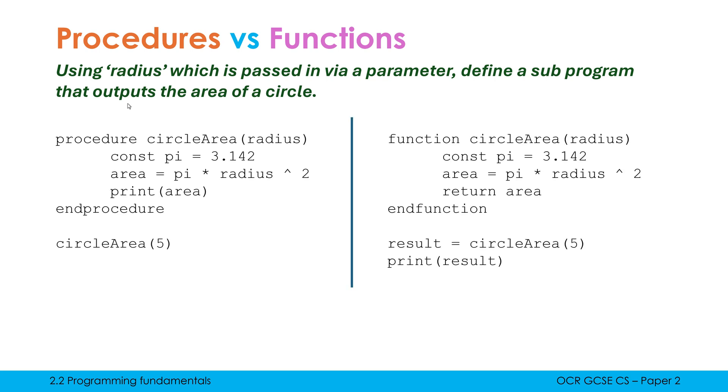So on the left we have a procedure in OCR exam reference language, and we have a function in OCR exam reference language. In Python, we use def for both definitions, so there is no easy way to see the difference apart from presence or not of the word return. If you compare them side by side, you can't see too many differences in our definition. The key one is I'm printing in my procedure and I'm returning in my function.